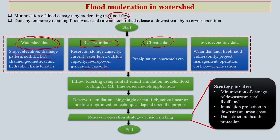You also have climate data covering precipitation, wind, etc. Then you have socio-economic data including water demand, livelihood vulnerability, project management system, operating cost, and power generation. Once you have all this data, using rainfall and runoff data you go for simulation models, flood routing, AI/ML, and different time series model applications to come up with anticipatory solutions.